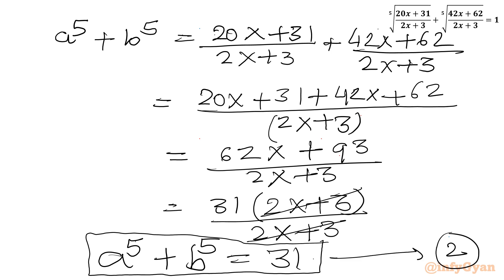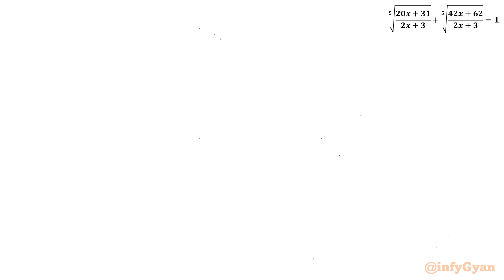So our two equations are: equation 1, a + b = 1, and equation 2, a⁵ + b⁵ = 31.